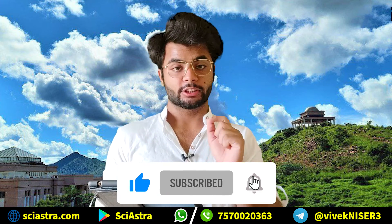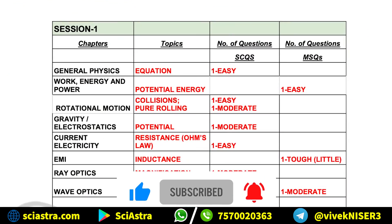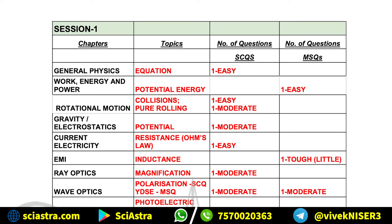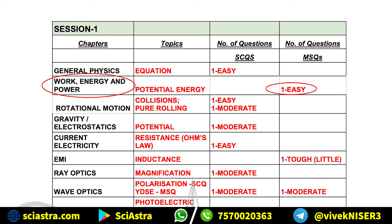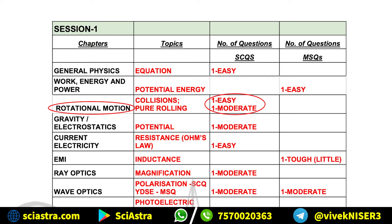Now, looking at the analysis of NEST 2021 physics section in Session 1: from General Physics, one equation-based question came. From Work, Energy and Power, one easy single-choice question and one easy multiple-select question came, that too from potential energy. In Rotational Motion, one easy single-choice question and one moderate single-choice question came, from oscillation and pure rolling motion.